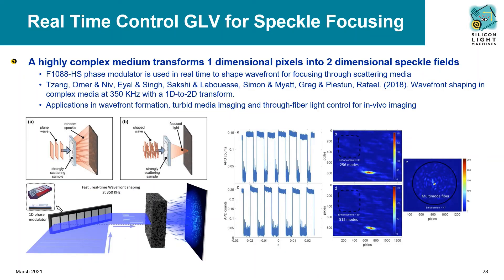The full possibilities of ultra-high-speed phase modulation with real-time control are just beginning to be explored. Researchers at CU Boulder demonstrated 1D wavefront shaping in order to image through a complex media, enabled only by the high speeds of the phased GLV with real-time controller feedback. This research has implications for imaging through scattering surfaces such as turbid media and for multi-mode fiber-based in vivo imaging by focusing light through the length of the fiber.